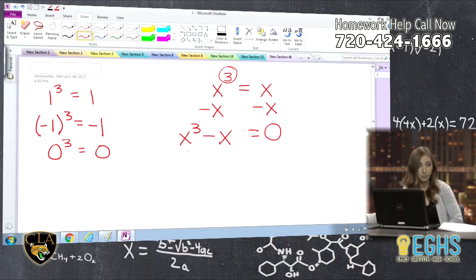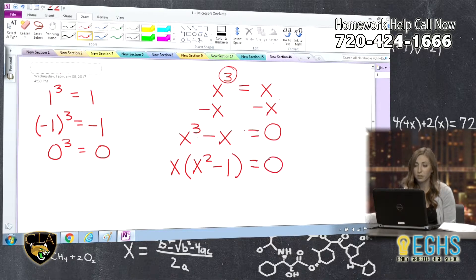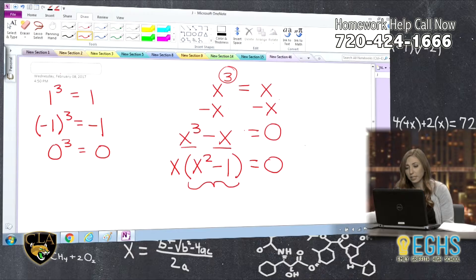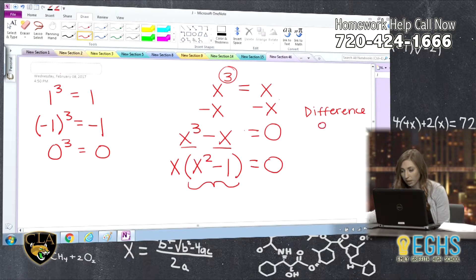And then from here, again, a strategy to solve higher degree functions or equations is to factor, get them into factored form. So this is why I factored out an X from both of my terms. So I took my X³ divided by X and I get X², and I took negative X divided by X and I get negative 1, kind of like backwards distribution.